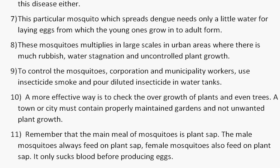This particular mosquito which spreads Dengue needs only a little water for laying eggs, from which the young ones grow into adult form. These mosquitoes multiply in large scales in urban areas where there is much rubbish, water stagnation, and uncontrolled plant growth.